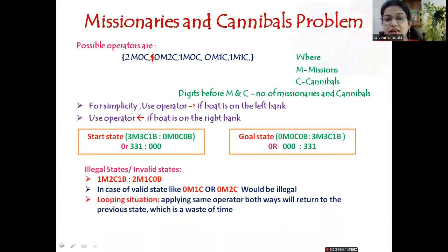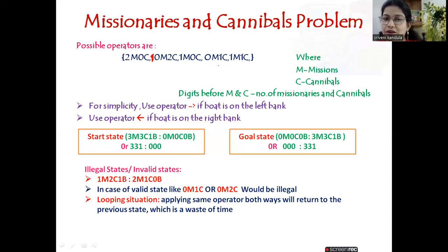There can also be a looping situation. If you apply the same operator in both directions — for example, sending one cannibal across and then bringing that cannibal back with the boat — you return to the same state. This is a looping state, which is a waste of time. We always try to avoid this kind of situation and skip such operators.